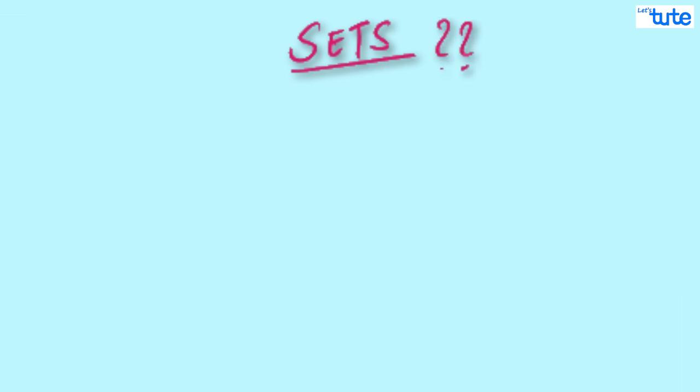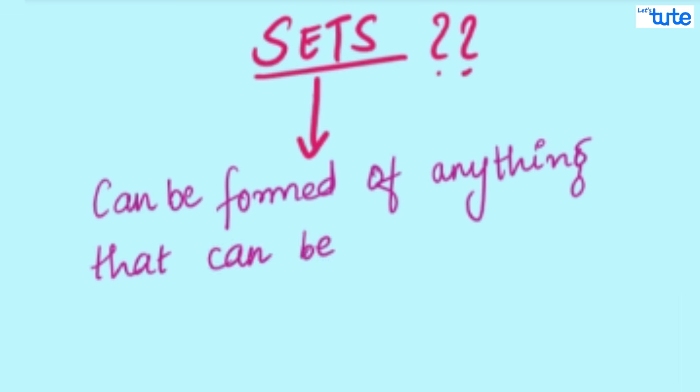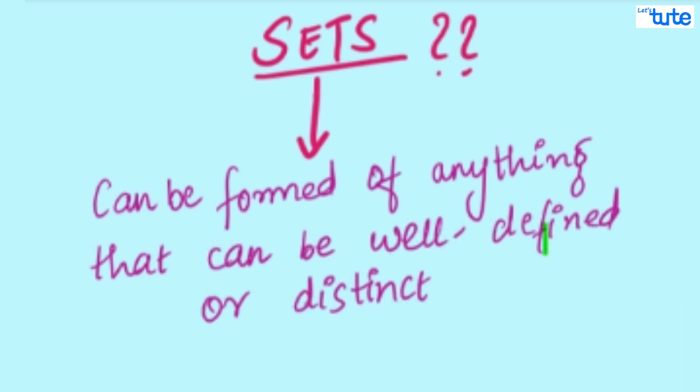But what exactly is a set? A set can be formed of anything that can be well-defined or distinct. Now, let's see what do we mean by well-defined or distinct.